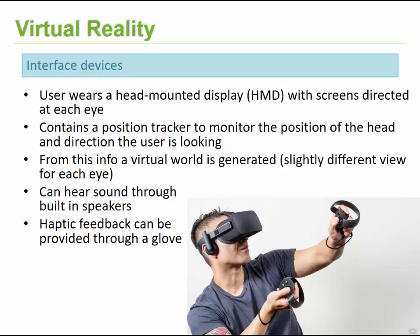These devices also contain position trackers that enable you to monitor the position of your head and the direction you're looking, allowing you to interact with the environment. The devices generate the 3D world, providing a different view for each eye. They include built-in speakers so you can hear sounds, and may also incorporate haptic feedback — for example, if you wear a glove.